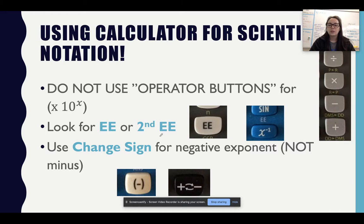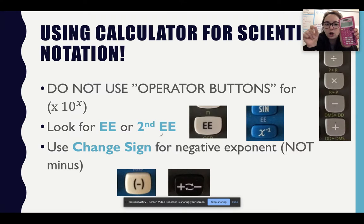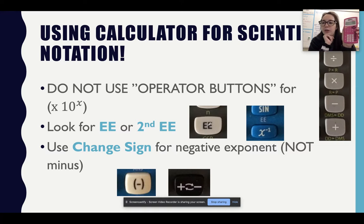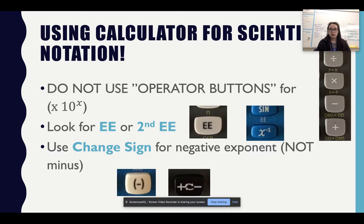When using your calculator for scientific notation, you're never going to use your operator buttons for the times-ten part. Do not use those unless you are doing multiplication, division, addition, or subtraction between two scientific notation numbers. You're actually going to use what we call the EE or second-EE button. If you have this calculator and don't see an EE button, hit the second button in the corner to find your EE. When you need a negative exponent, use your change-sign button at the bottom — do not use the subtraction sign or you'll get a syntax error. Please practice with your calculator, and if you have issues, come see me.